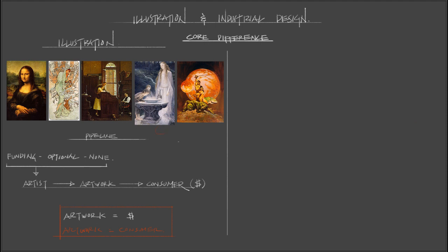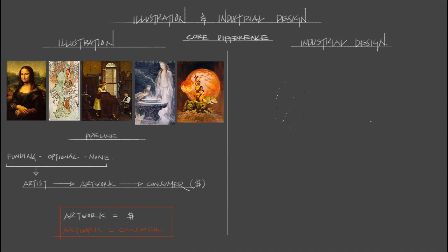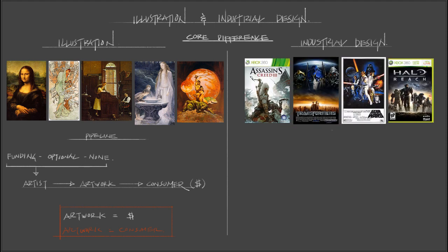Now let's go to the industrial design side. Notice I didn't put any paintings or drawings here — what I've put here are the products themselves. For industrial design, our main focus is not the artwork but the end result product. The consumer never gets to see the artwork behind Assassin's Creed or Transformers — they have to dig pretty hard to find it in behind-the-scenes or 'Art of' books. The average moviegoer or video game player doesn't care what the artwork looks like. That's the fundamental core difference when you compare the products.